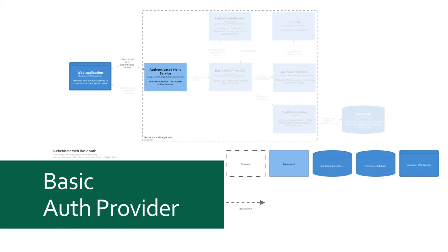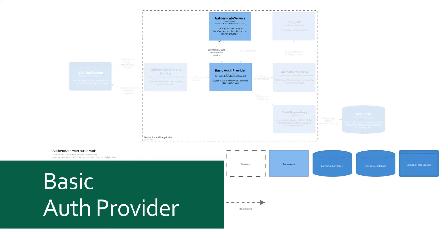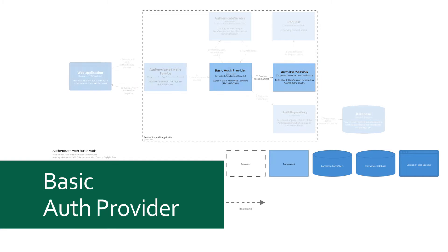Once the user provides valid credentials to access the authenticated service, another request is fired, but this time with the Authorization header populated with the Base64 encoded username and password. The Authenticate attribute filter then runs a process against the request called pre-authenticate, using any registered auth providers that implement the IAuthWithRequest interface. This locates the registered basic auth provider and runs the implemented pre-authenticate method. The basic auth provider then extracts the credentials from the Authorization header and runs it through the authenticate service internally. The auth provider then validates the provided credentials with the registered IAuthRepository before continuing to call the original authenticated service.